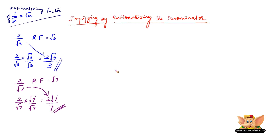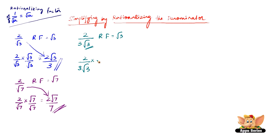Let us solve another example, which is 2 by 3 root 3. So here the rationalizing factor is root 3 — you just have to choose only the number under the root. Therefore, multiply and divide 2 by 3 root 3 by root 3, which gives us 2 into root 3 is 2 root 3, and root 3 into root 3 is 3, and 3 into this 3 is 9. Therefore, 2 root 3 by 9 is the rationalized or simplified form of 2 by 3 root 3.